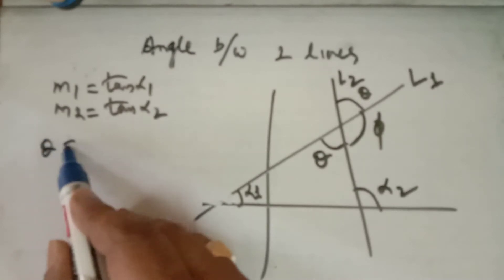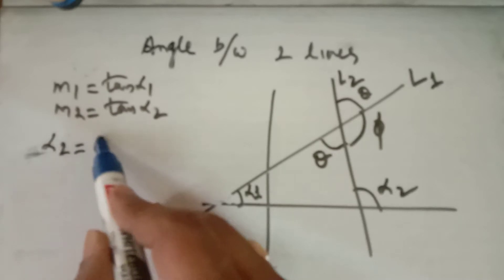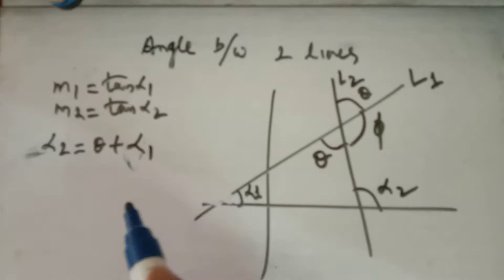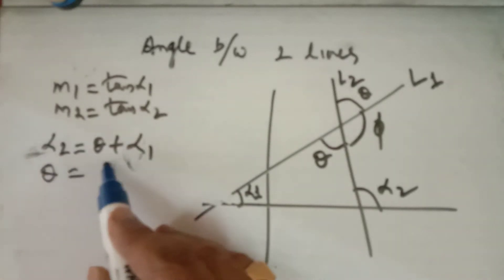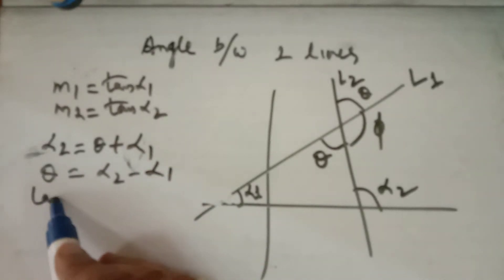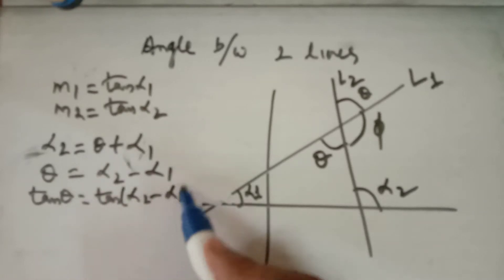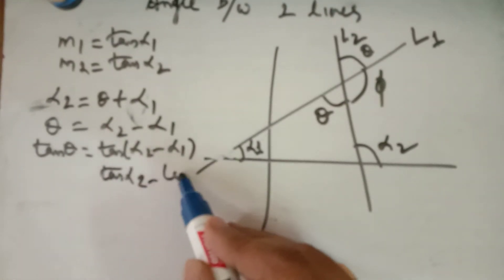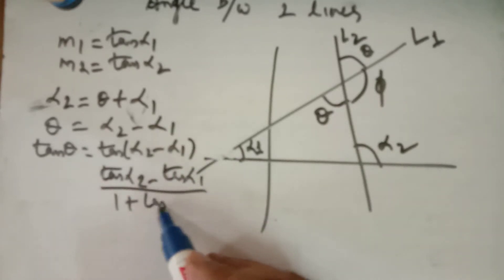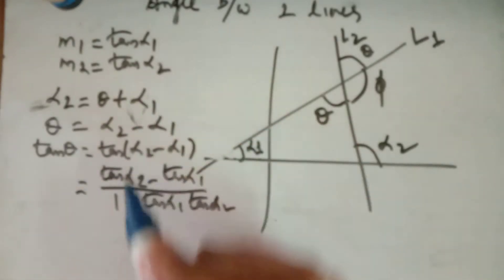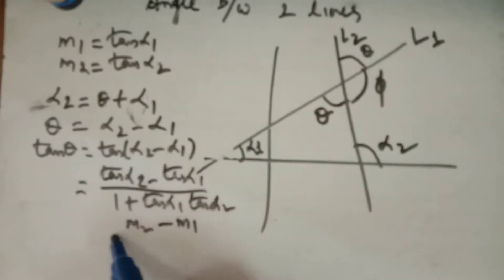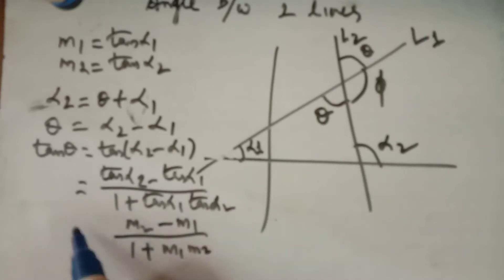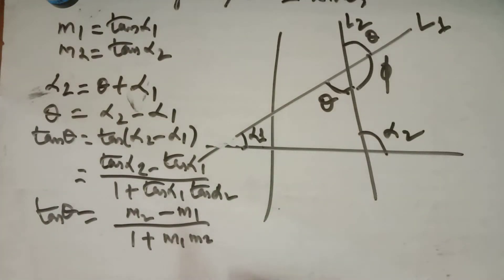Because alpha 2 = theta + alpha 1, that is, the exterior angle equals the sum of interior opposite angles, theta = alpha 2 - alpha 1. Taking tangent on both sides: tan(theta) = tan(alpha 2 - alpha 1). Using the formula for tan(A - B), the right side becomes (tan(alpha 2) - tan(alpha 1)) / (1 + tan(alpha 2)·tan(alpha 1)), which gives us (M2 - M1) / (1 + M1·M2). This is tan(theta), the angle between the two lines.